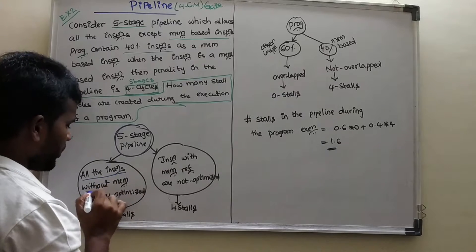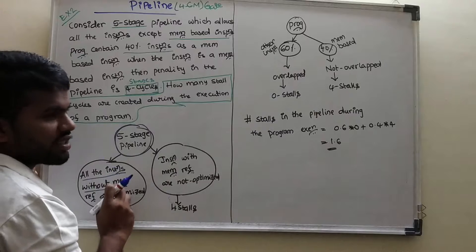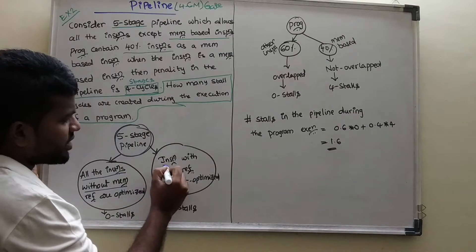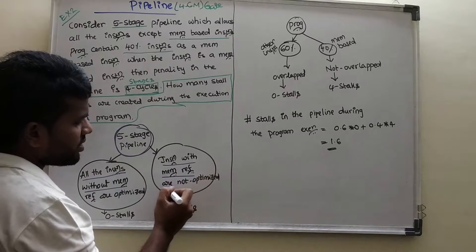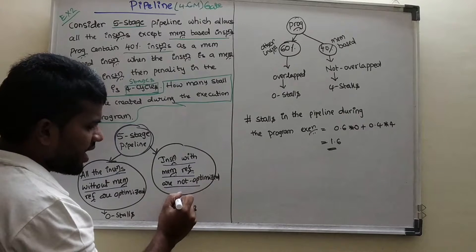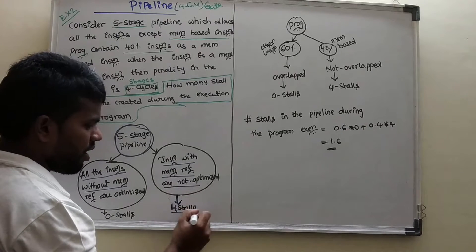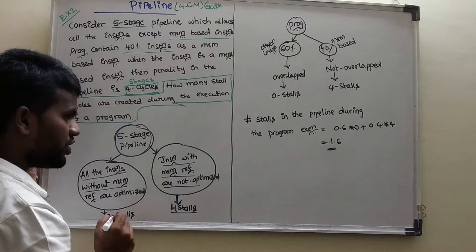Then we have to define things. All the instructions without memory based, that means other instructions except memory based. Instructions with memory based are not optimized and it will take 4 cycles or 4 stalls. It will take 0 stalls.